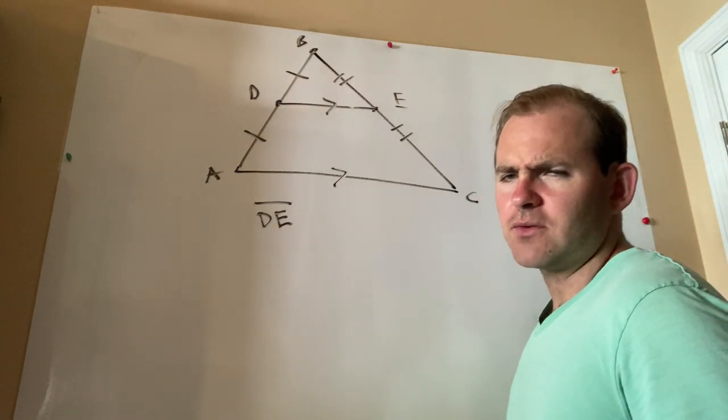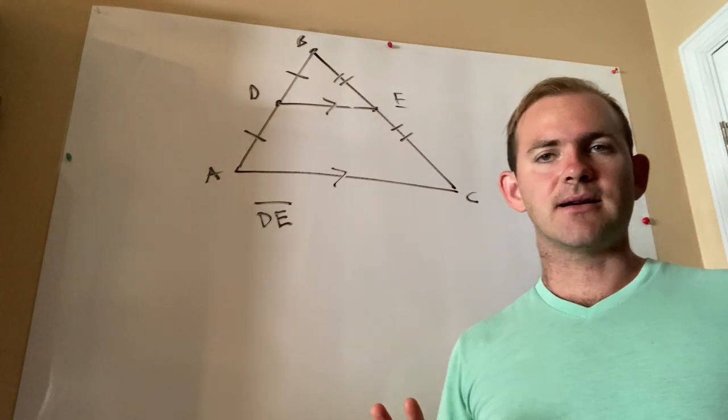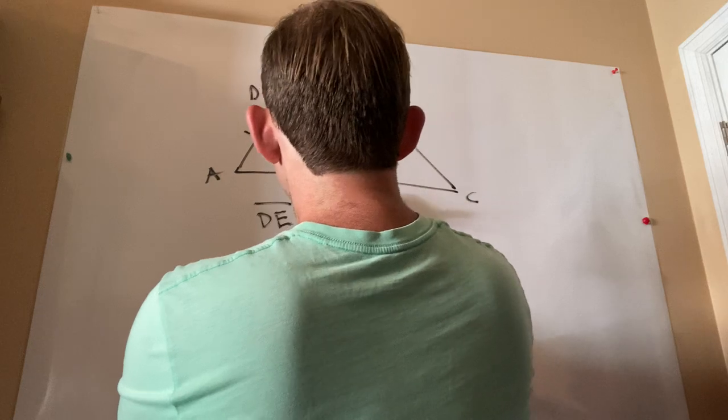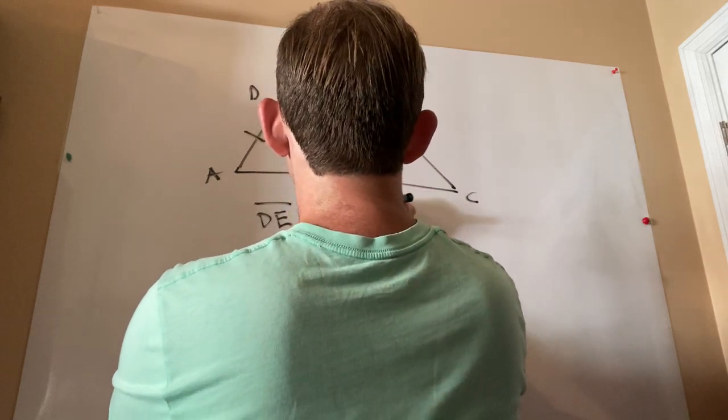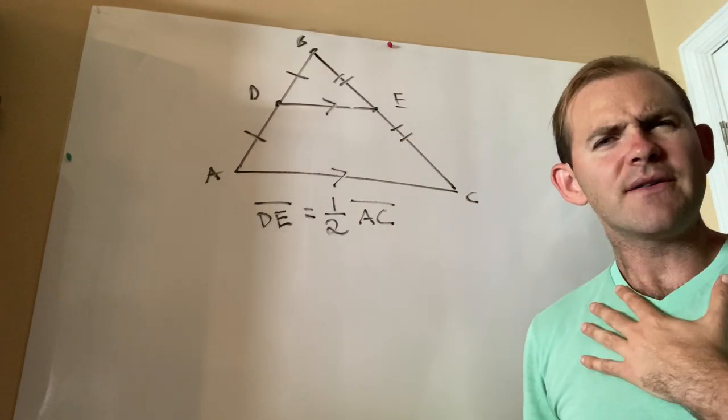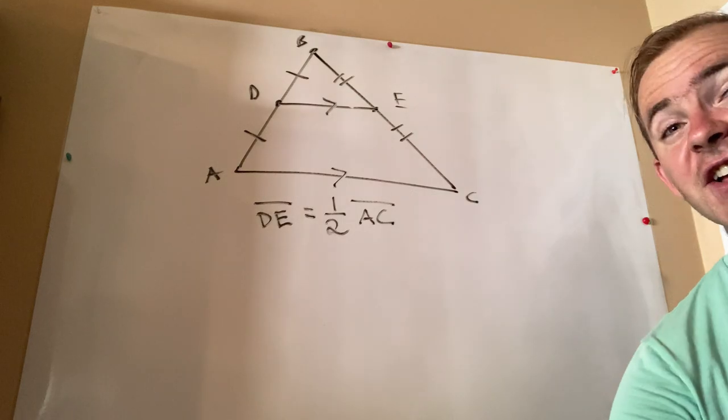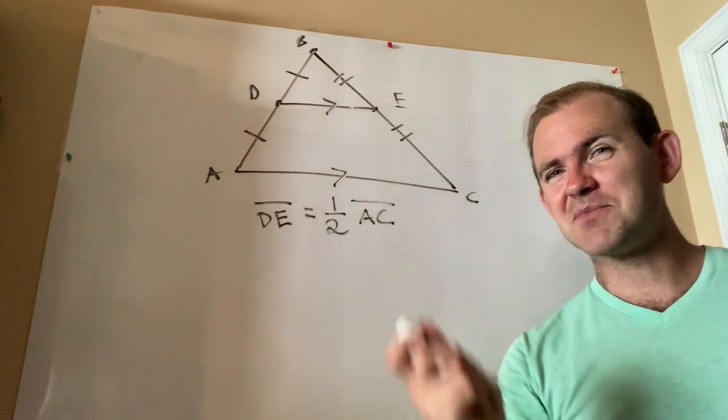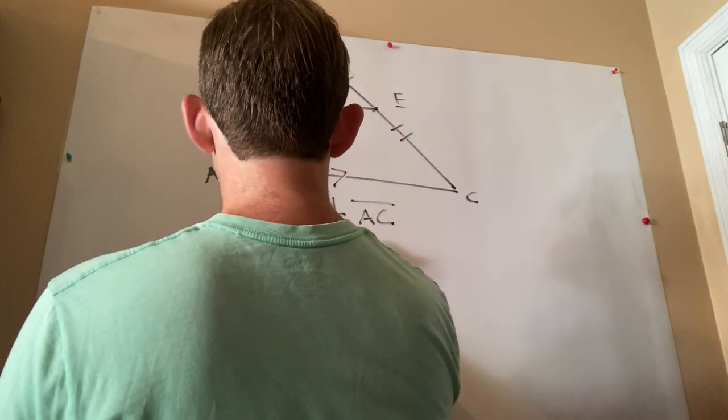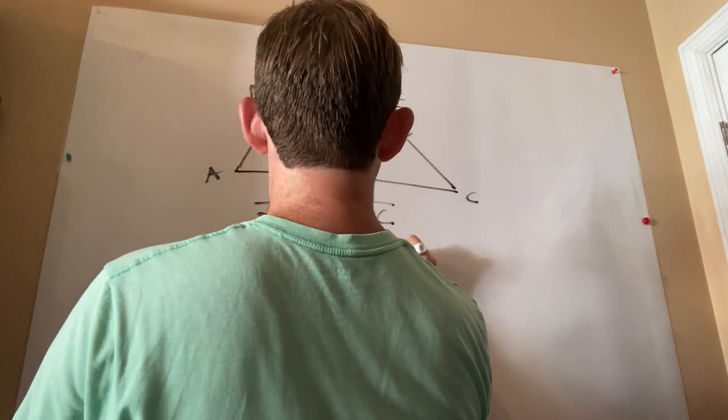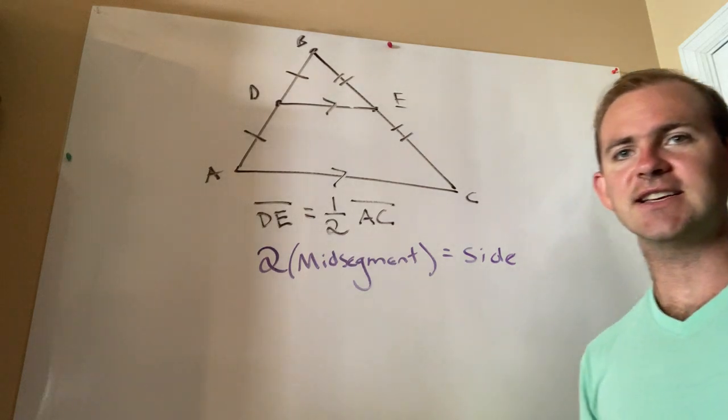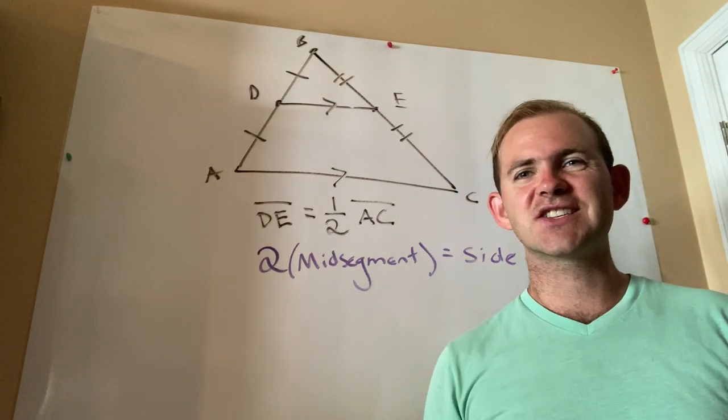So there are two different ways of representing this triangle mid-segment theorem. Now, I'm going to show you the normal way. The normal way is to say that segment DE is one-half of segment AC. In other words, the mid-segment is half as long as this. However, algebraically, I think it's actually a lot easier to represent it another way. So I'm going to write this in purple. This is my preferred way of remembering the mid-segment theorem. Now, it takes two mid-segments, so two times the mid-segment, to equal the side. Two times the mid-segment equals the side.